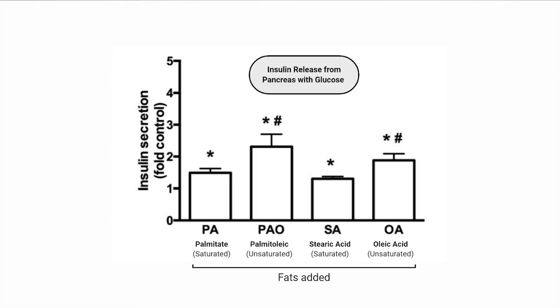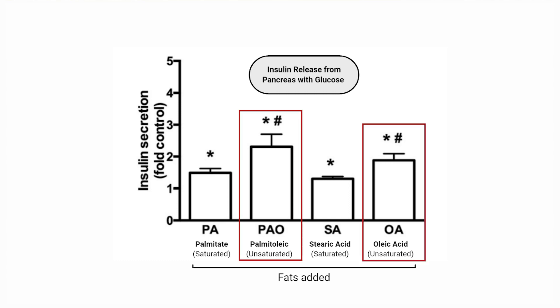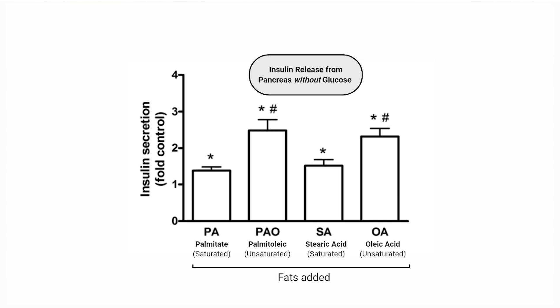With glucose in the media, the addition of any of the four fats led to an increase in insulin release. However, interestingly, monounsaturated fats led to a greater insulin release. Even when glucose was not in the media and the cells could only rely on fat for energy, insulin was still secreted from the pancreas. So at this point, we know fatty acids stimulate insulin release.